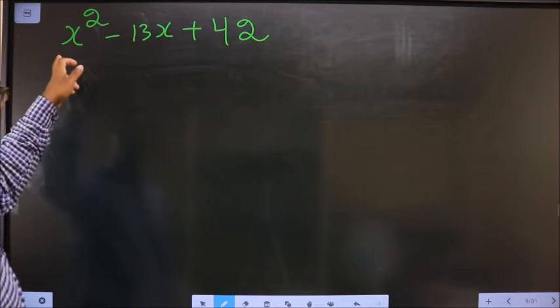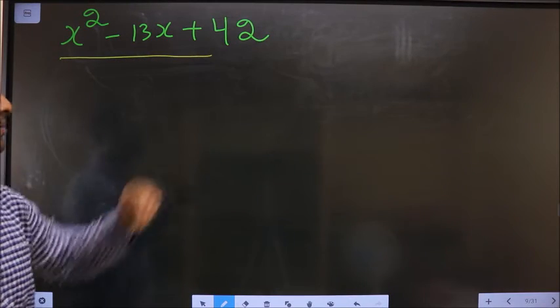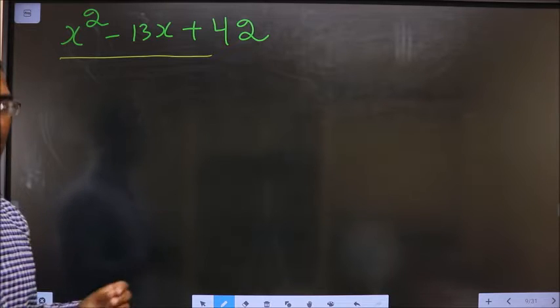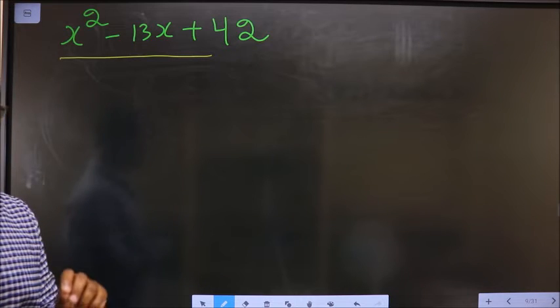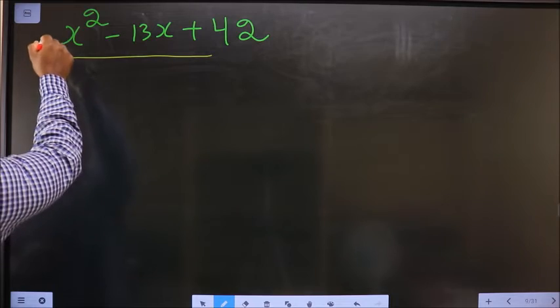Factorize x² - 13x + 42. How do we factorize it? See, in step 1, whatever number you have here should be multiplied to the constant.